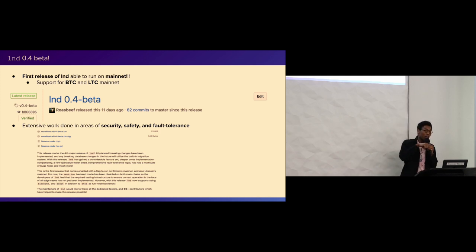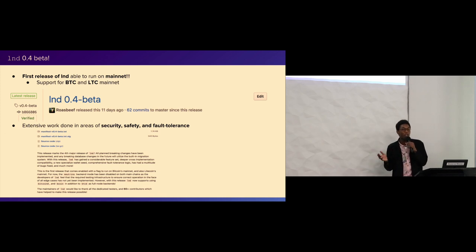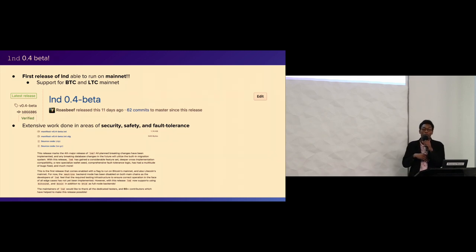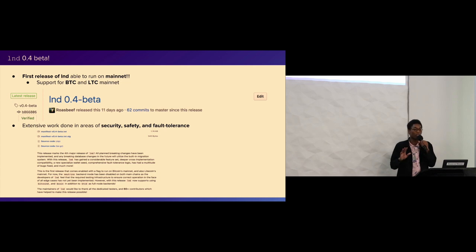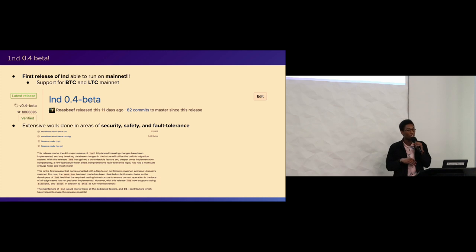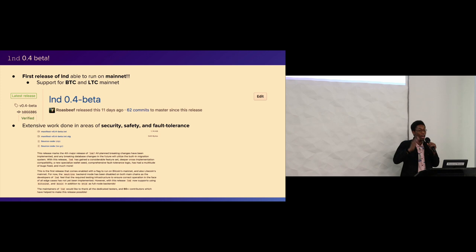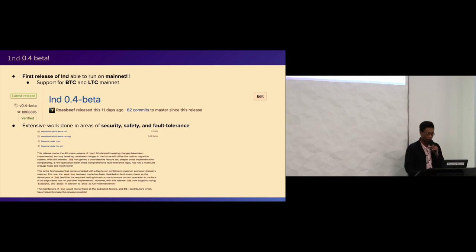Most of the work within 0.3 alpha and 0.4 beta was around security and fault tolerance. Before, there were no backups at all - if it crashed, everything was in memory. If you got forwarded HTLCs, you couldn't resume any kind of multi-step contract handling. All of that's been taken care of. This was the first release we could feel comfortable with people running on mainnet. We now have a good degree of confidence that if things go down, LND will actually correct itself, and if it ever crashes, it's able to resume where it was.